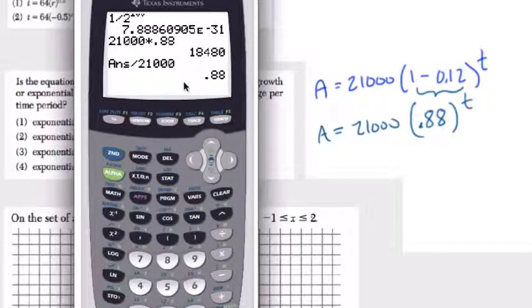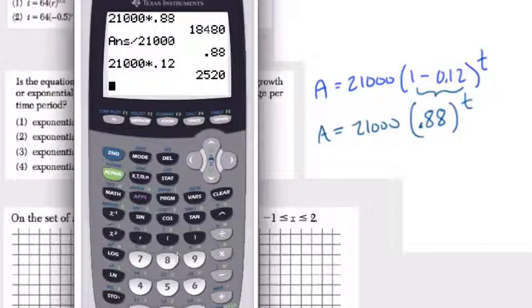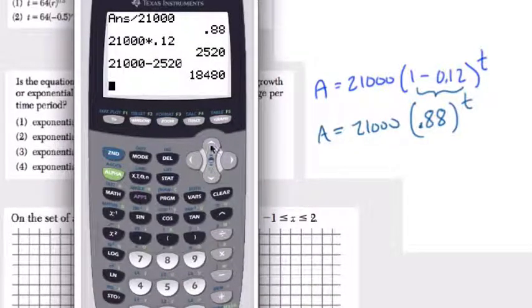So we lost 12%, right? If we took 21,000 and we multiplied it by 12%, 0.12, that's 2,520. If we take 21,000 and subtract 2,520, we get 18,480, which is our new value.